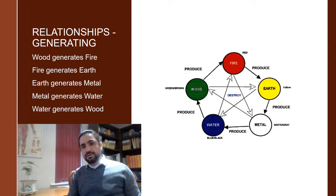This forms a cycle because wood generates fire, fire generates earth, earth generates metal, metal generates water, water generates wood, and the cycle starts again.